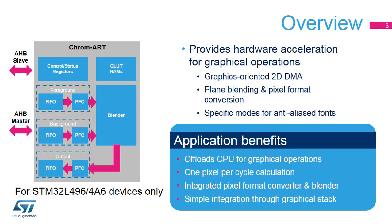The Chrom-ART Accelerator offers true hardware acceleration for graphical operations. It is built around a 2D DMA engine for fast data copy with specific functions to support pixel format conversion, as well as blending operations between two planes.